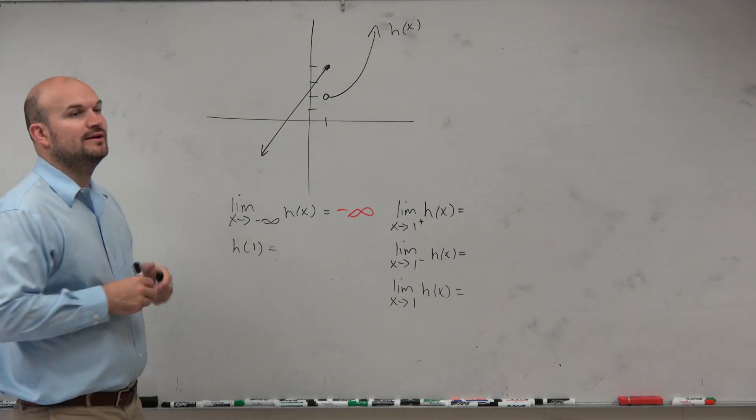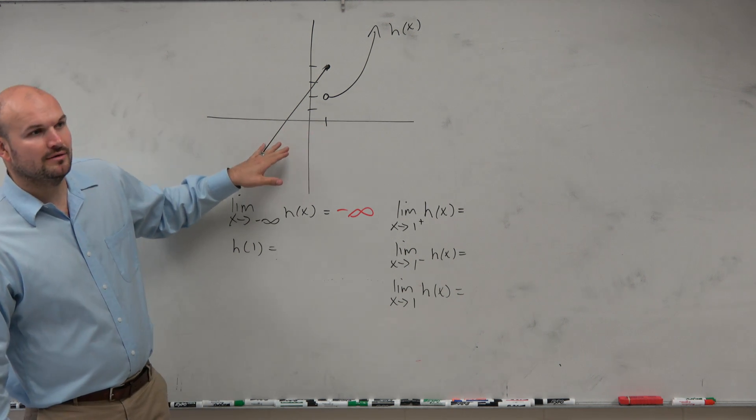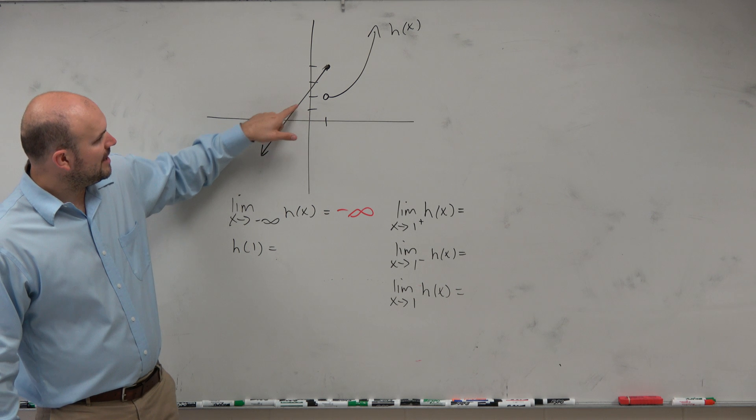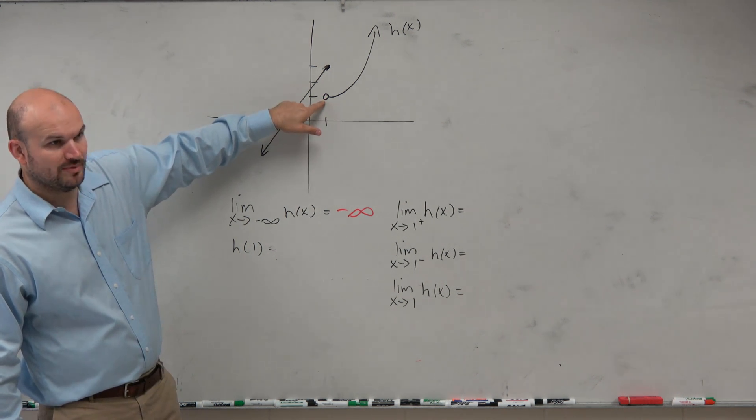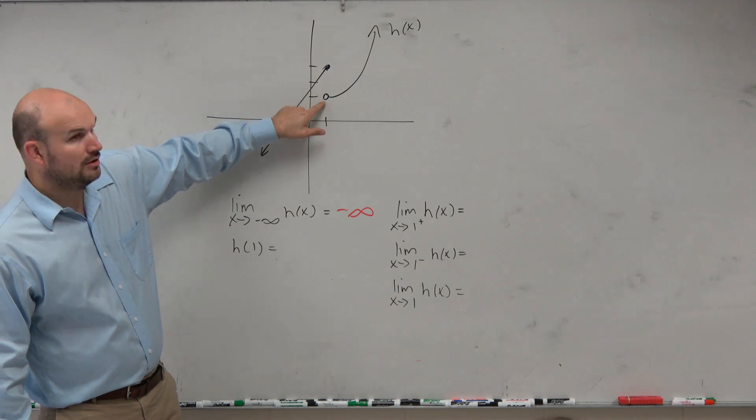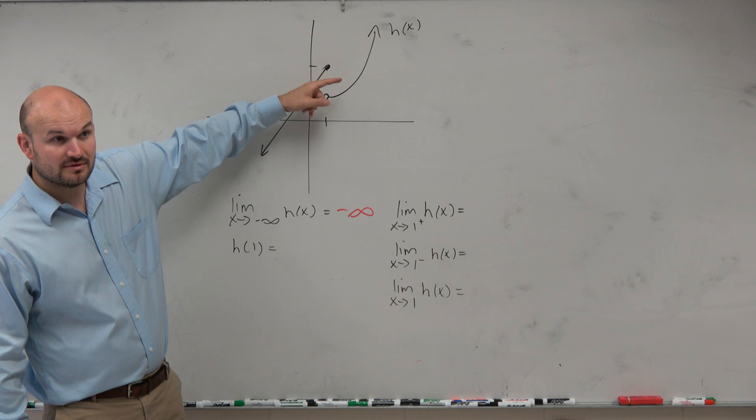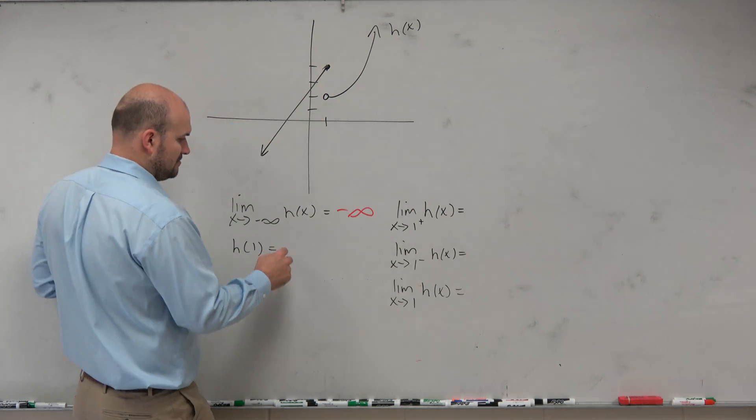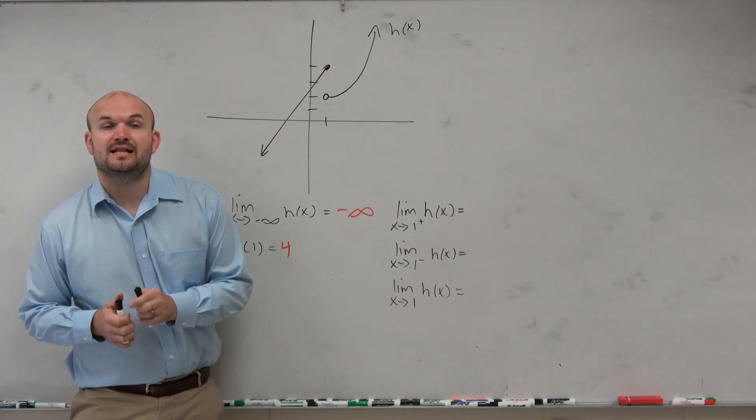The next one is h of 1. And we talked about this when we did piecewise functions. So if you guys are looking at h of 1, what we see here is, you go over to 1, and at 1, where there's no value here, that's an open dot, right? That's open, hole. But we could go up to here, and that point is value, right? So that value is 4. So that's the value of the function, we should be at 4.